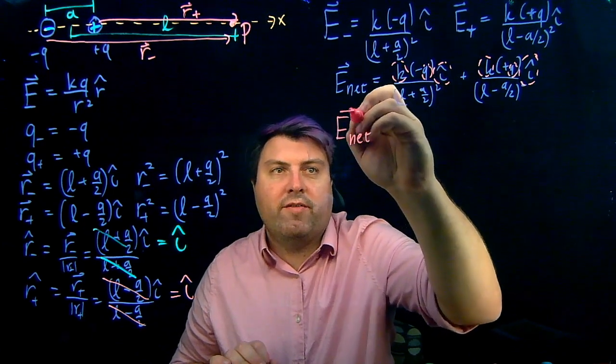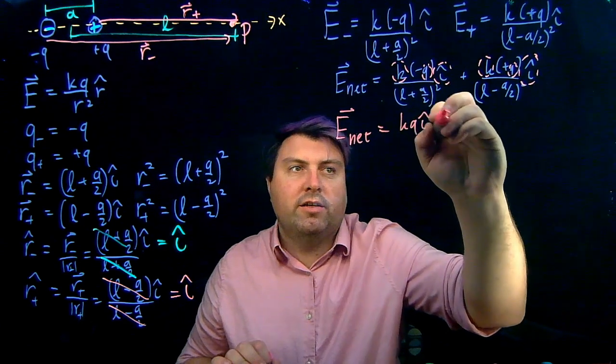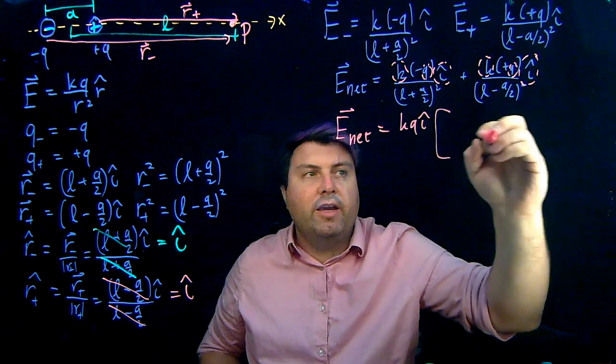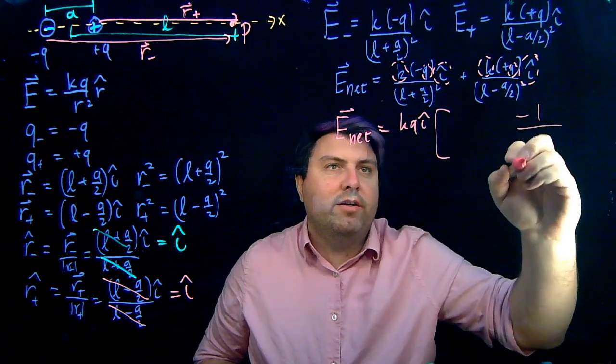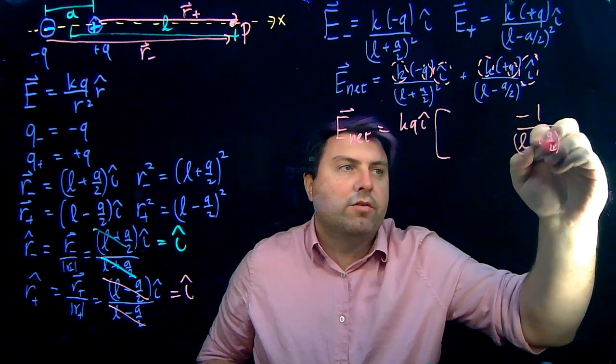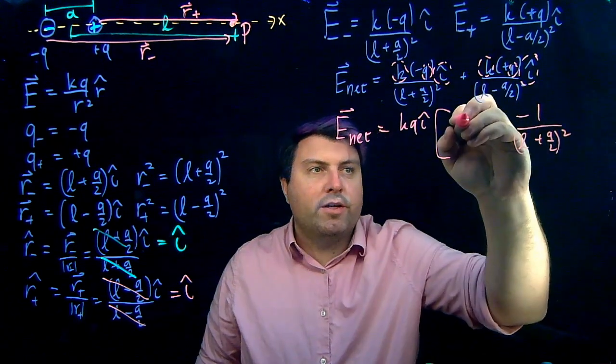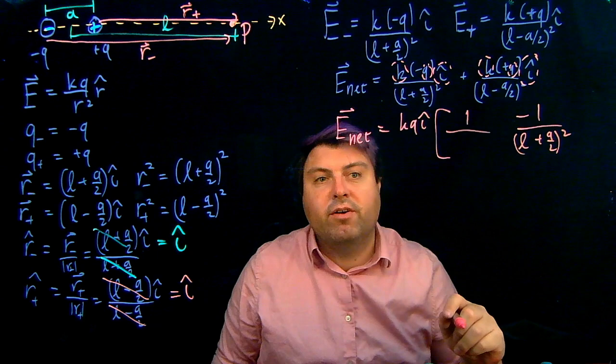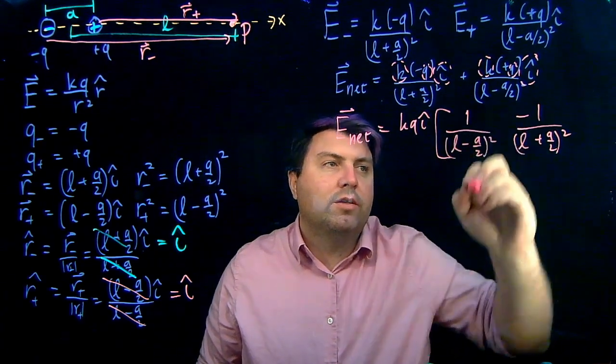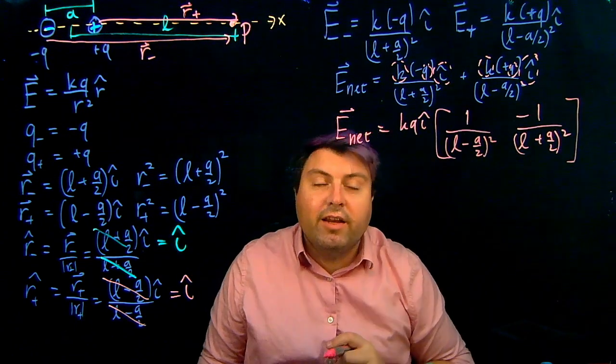So now we have our net electric field is KQ I hat, and then what we have left is a negative here. I'm going to write it kind of over here. Negative 1 over L plus A over 2 quantity squared, and then a positive, just because we like positives in front, 1 over L minus A over 2 quantity squared.